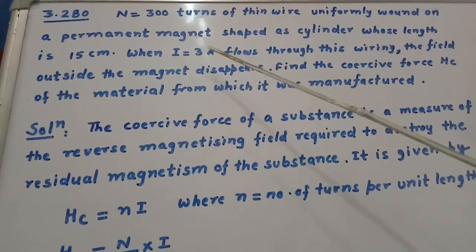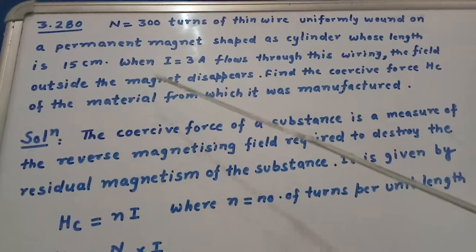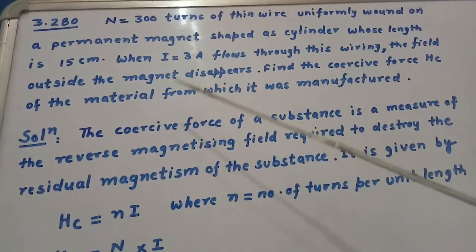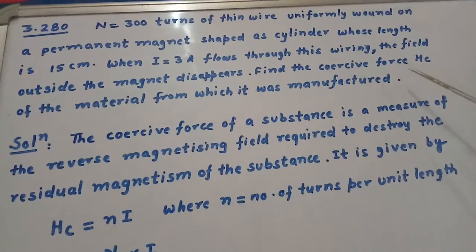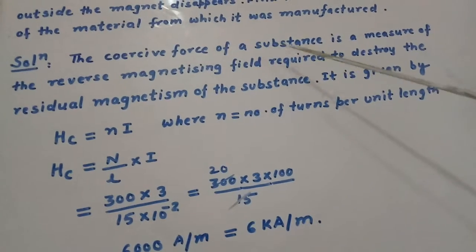When I equals 3 ampere flows through this wiring, the field outside the magnet disappears. Find the coercive force Hc of the material from which it was manufactured. We know that the coercive force of a substance is a measure of the reverse magnetizing field required to destroy the residual magnetism of the substance.